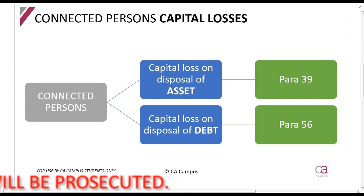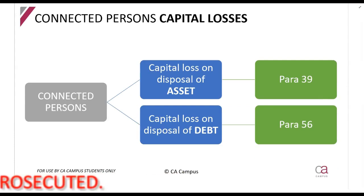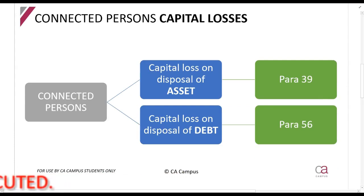The first category is connected persons capital losses, and this is what most of these provisions describe. We've got two situations: Paragraph 39, which discusses a situation where you sell an asset to a connected person and you make a loss, and Paragraph 56, which covers a capital loss on a disposal of a debt owed by a connected person.